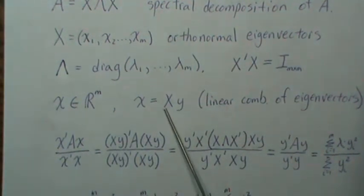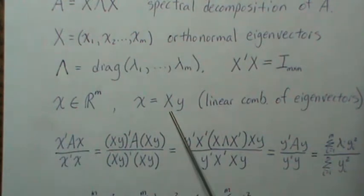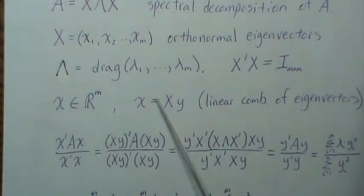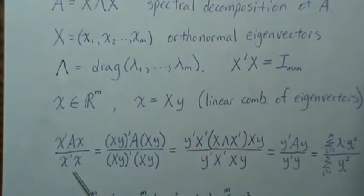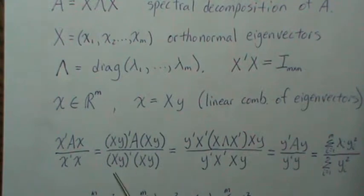Because x has to be represented as a linear combination of these eigenvectors, we substitute that in for each x. And then in this step we take the transpose through and take the transpose there, but we let A be its spectral decomposition right here.